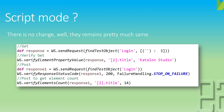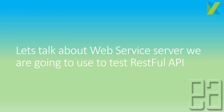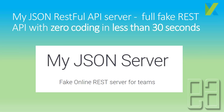There is no change in script mode — it is going to look pretty much exactly how it was before. Now let's quickly talk about the web service server we're going to use for testing the RESTful API. We'll use the JSON Server — a full fake REST API server with zero coding in less than 30 seconds. I'm not going to build a whole new RESTful API server; I'll just use this free online tool to show you how to work with Katalon Studio for RESTful API testing.